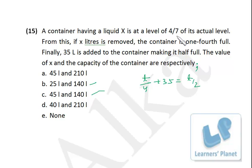So 4/7ths of 140 is 80, so initially it's 80 liters. And X liters is removed, then it is one-fourth full. So one-fourth of 140 is 35, right? So X will be 45, as simple as that.